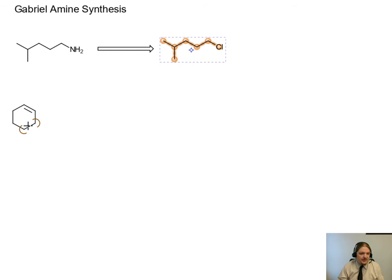And so here's what the Gabriel Amine Synthesis uses as a nucleophile. This nucleophile here is called phthalimide. And it's the imide, which is the nitrogen between two carboxylic acids. And it's formed from a carboxylic acid called phthalic acid, P-H-T-H. And it's an interesting spelling, and it's a little bit tricky pronunciation.